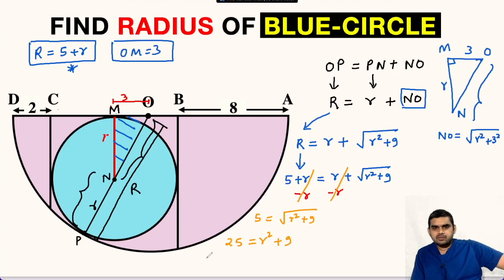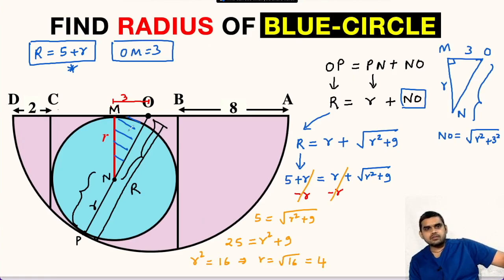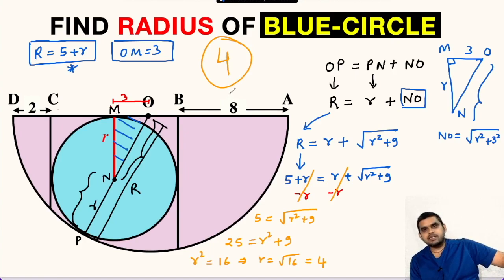Subtracting 9 from both sides gives r squared = 16, so r = square root of 16, which is 4. The radius of this blue circle is 4 units. If you want more such videos, do subscribe to my channel. See you in the next video.